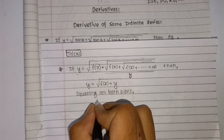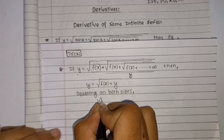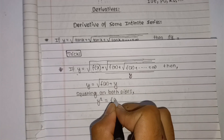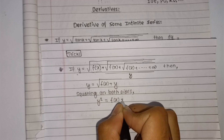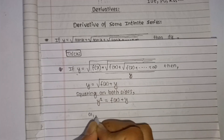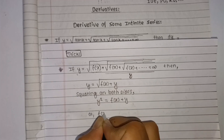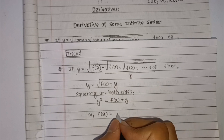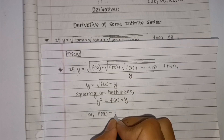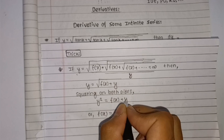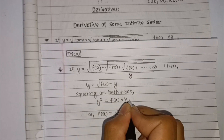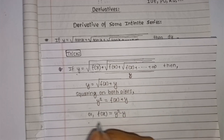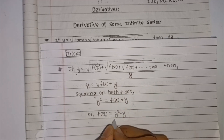x plus y is equal to f(x), and f(x) is equal to y square minus y. So we have the function f(x) set up.